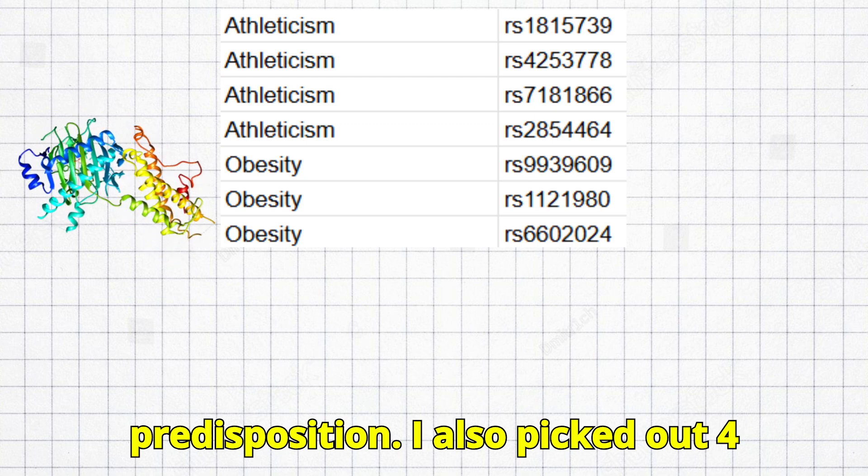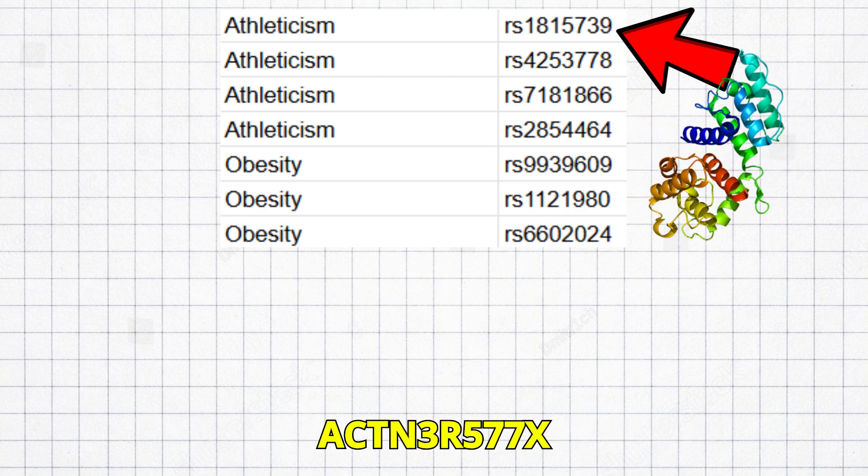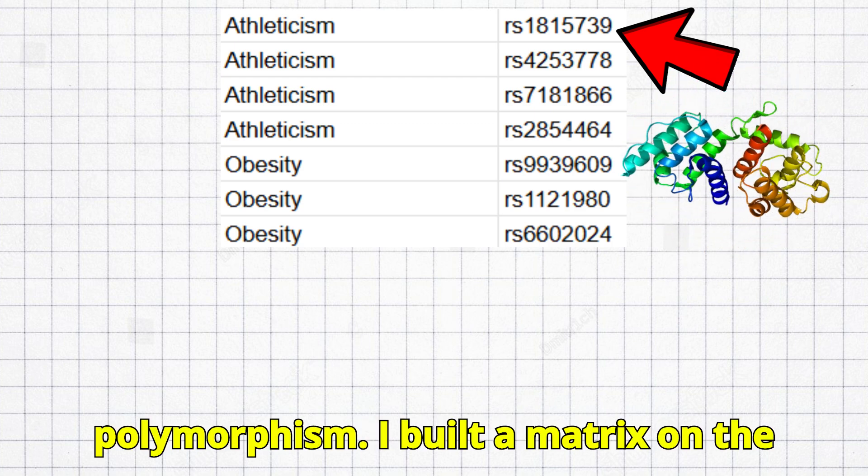I also picked out 4 SNPs related to athletic ability, the most impactful of which is the ACTN3 R-577X polymorphism.